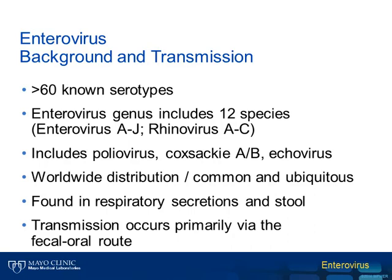The genus enterovirus includes over 60 known serotypes as well as 12 species. It's because of the large number of serotypes that individuals are susceptible to multiple infections with enterovirus, as the immune response to one serotype doesn't necessarily confer protection to other serotypes. There are a number of different viruses that fall into the enterovirus genus, including poliovirus and non-polio enteroviruses, such as Coxsackievirus and echovirus.